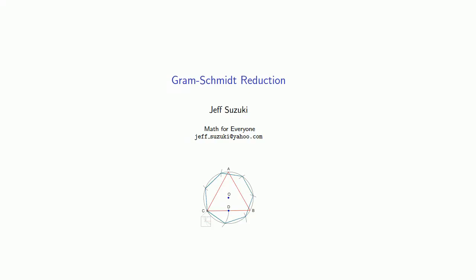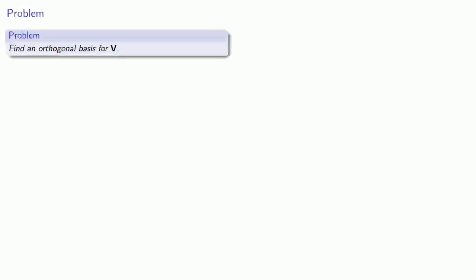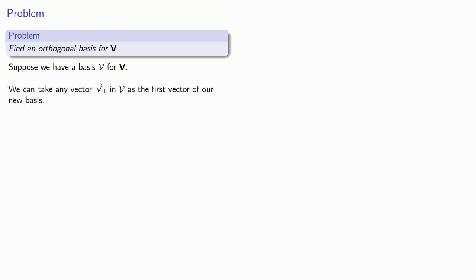One important thing we can do with a set of basis vectors is what's called Gram-Schmidt reduction. That's centered around the following problem: find an orthogonal basis for some vector space. So suppose we have a basis for our vector space. We can take any vector v1 in our set v as the first vector in our new basis. But what about the rest?